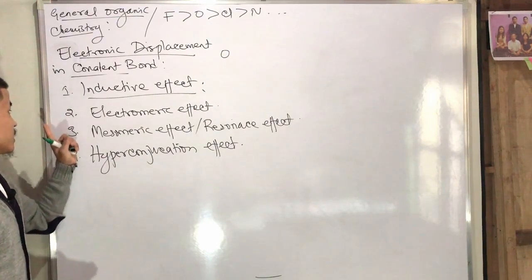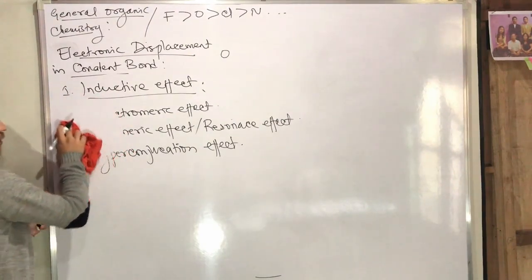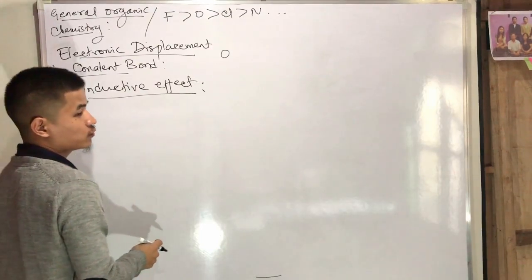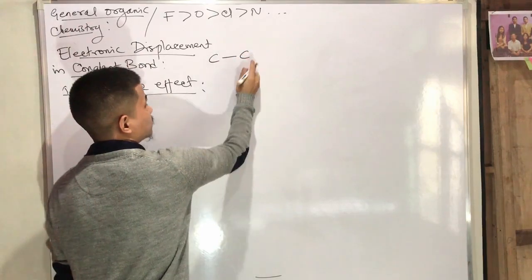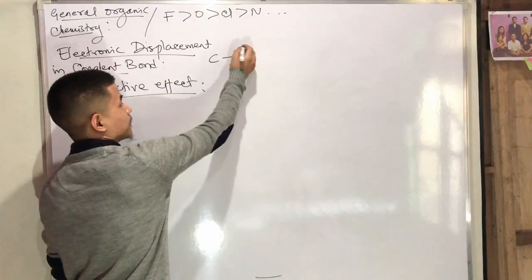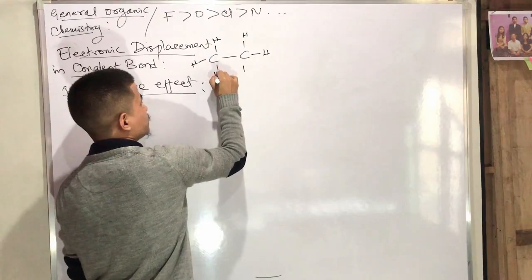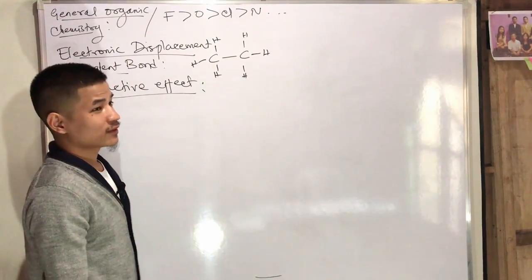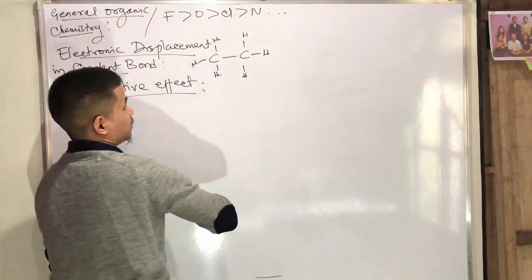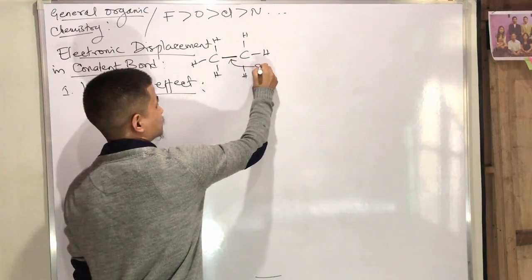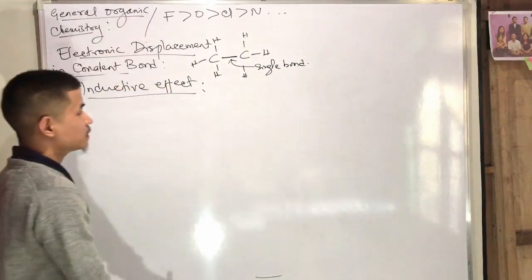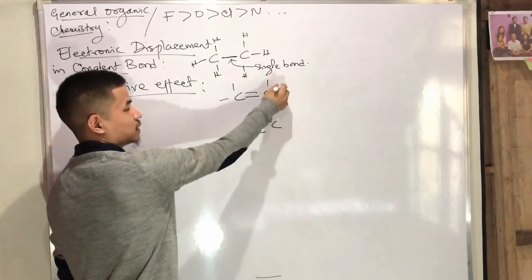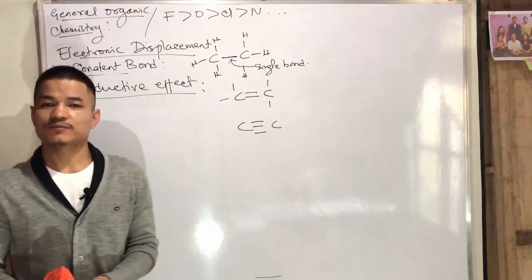I'm going to show you the inductive effect. The inductive effect is very important. The single bond is a single bond. So it's a double bond. So it's a triple bond. Multiple bonds can be used by carbon — catenation of carbon.